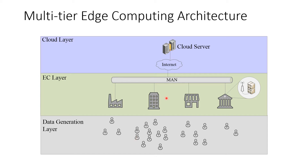In the second tier, we have edge-related resources, mainly micro cloud edge servers, which are connected via metropolitan area network. And finally, in the third tier, we have a global cloud server.